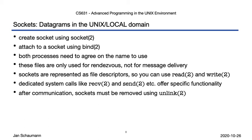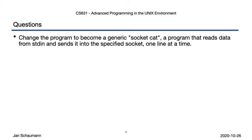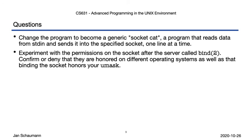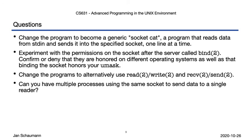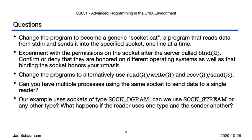Before we go, here are a few questions and exercises. Our sender program currently always sends a fixed message — can you change it to write data read from stdin into the socket instead, one line at a time? Play around with the permissions on the socket after the server calls bind: what happens if you restrict them, and what other processes can use it? Change the two programs to use the respective other system calls for I/O — change the reader to use recvfrom and the sender to use write. Can you have multiple processes using the same socket to send data to a single reader? For this, you'll have to change the reader to loop and read repeatedly. And finally, what happens if you change protocols or socket types — can we mix and match? Good luck and thanks for watching.